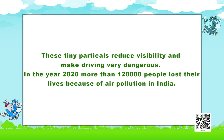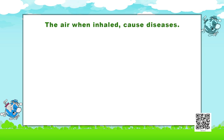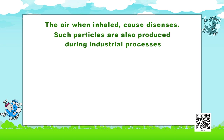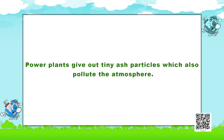In addition to the above mentioned pollutants, automobiles produce tiny particles which get suspended in the air. When we breathe these suspended particles, it causes different kinds of diseases and damages our lungs. These tiny particles also reduce visibility and make driving very dangerous. In the year 2020, more than 120,000 people lost their lives because of air pollution in India. Such particles are also produced during industrial processes like steel making and mining. Power plants give out tiny ash particles which also pollute the atmosphere.